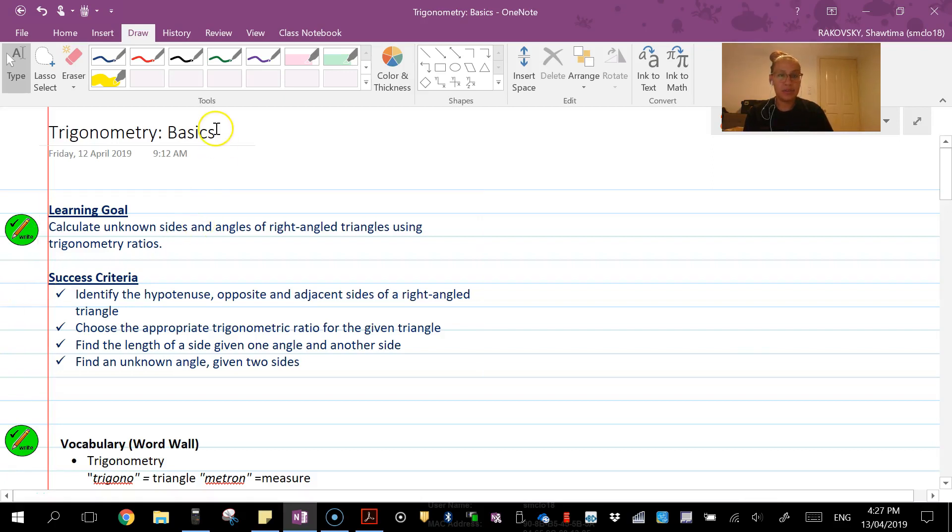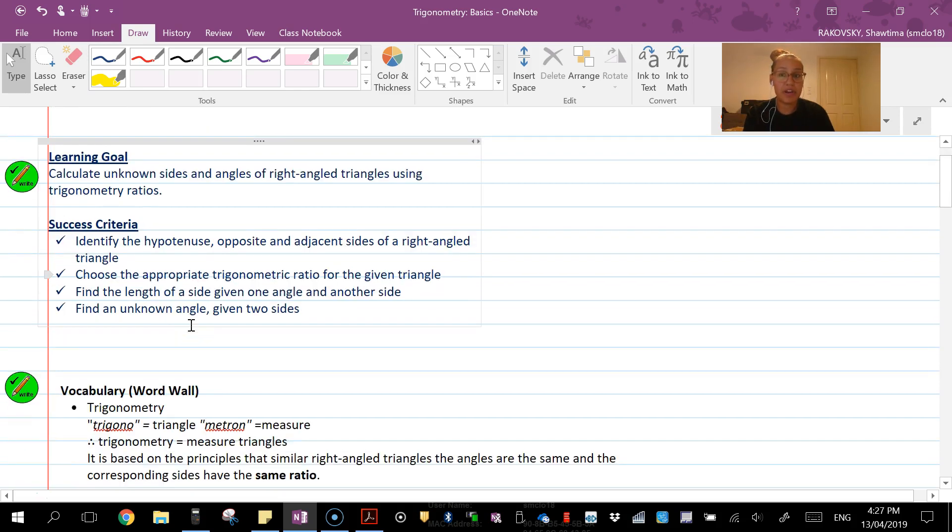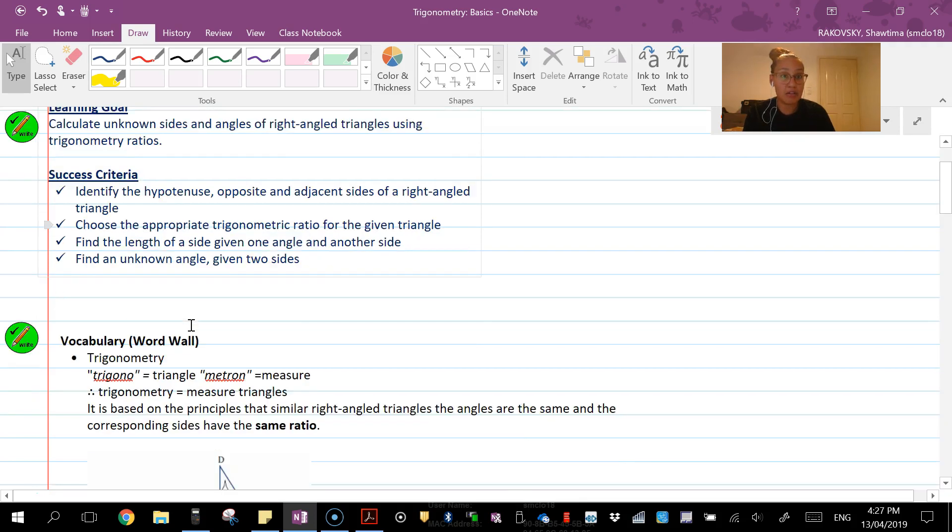This is part two on trigonometry basics. This video will look at calculating unknown angles for right angle triangles. You still need to identify hypotenuse, opposite and adjacent sides, choose the appropriate ratio, and then use algebra to find your unknown angle.